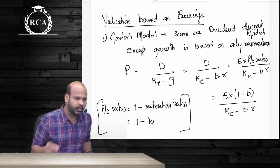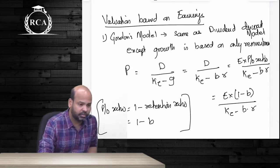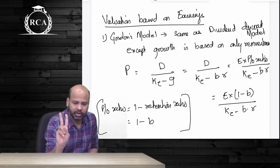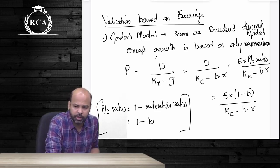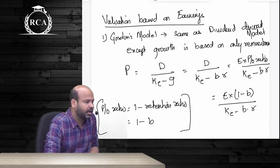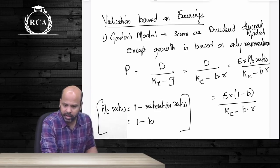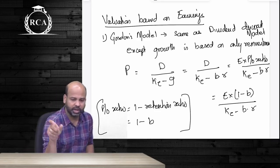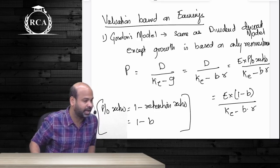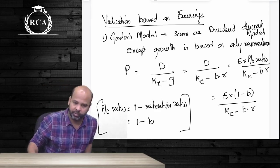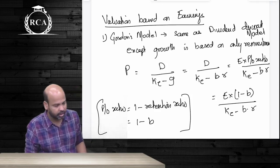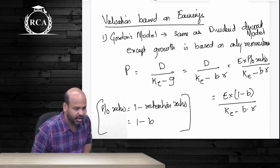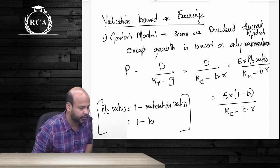Under valuation based on earnings, we have Gordon's model. Gordon's model is essentially a copy of the dividend discount model, except that growth rate can be computed in two ways: growth from operations (product demand and prices increasing year after year) or growth on account of reinvestments. What is sustainable over the longer period is only growth from reinvestments. That is why Gordon's model only considers growth on account of reinvestments, written as B×R, where B is the retention ratio and R is return on equity. The formula is D1 divided by (KE − G), where G = B×R.